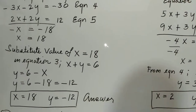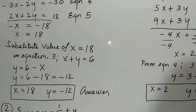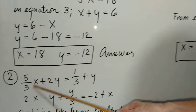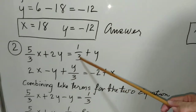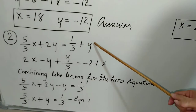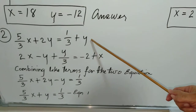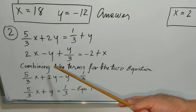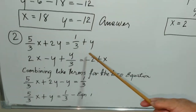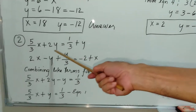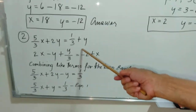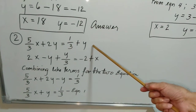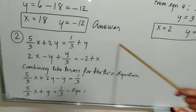That's how we solve problem 1. For problem 2, the given equations are 5 over 3x plus 2y equals one-third plus y (equation 1) and another equation (equation 2). We transpose y to the other side of equation 1.